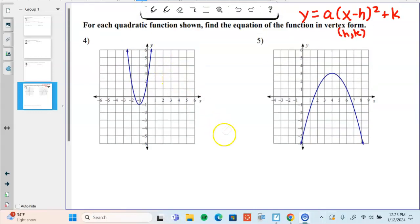Alright, for each quadratic function shown, find the equation of the function in vertex form. I've written the vertex form right here: y equals a times x minus h squared plus k. So the vertex is h, k. What I'm going to do for question number four...